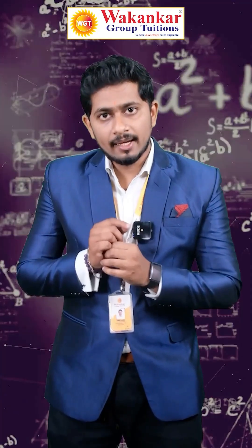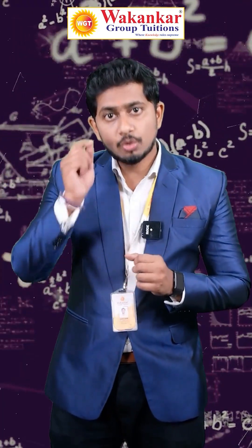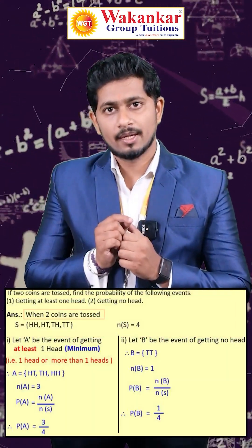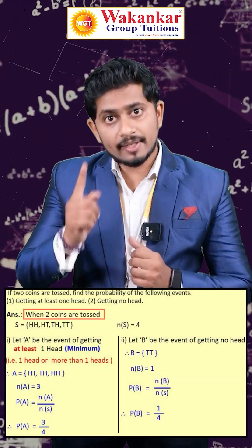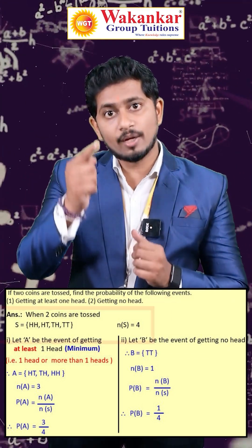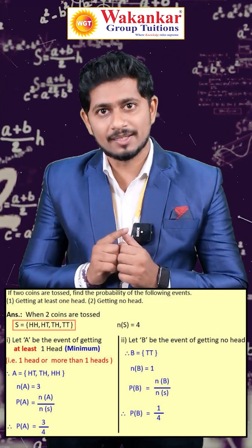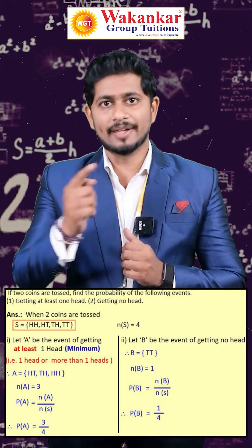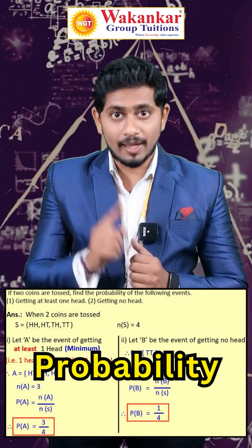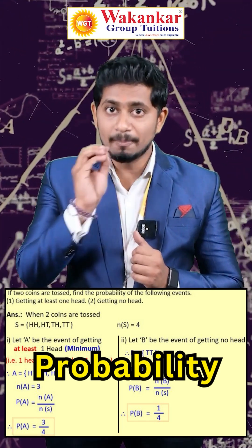For chapter number 5, the student should first identify the random experiment. Once you identify the random experiment, write down the sample space and then find its probability. Chapter 5 is again a very simple topic.